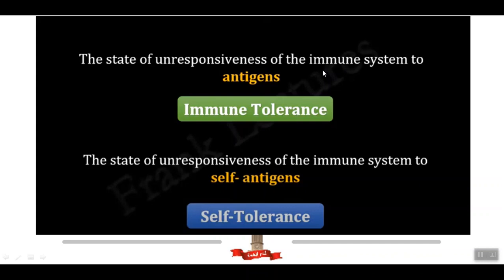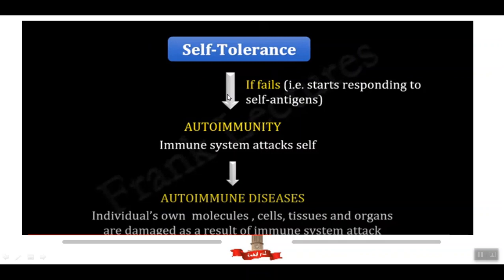The state of unresponsiveness of the immune system to antigens is called immune tolerance, while unresponsiveness specifically to our self-antigens is called self-tolerance. Self-tolerance is the main mechanism that prevents auto-reactive T and B lymphocytes from invading our tissue and causing autoimmune diseases. If self-tolerance fails and auto-reactive lymphocytes start responding to self-antigens, it causes autoimmunity — the immune system attacks our own cells, damaging individual molecules, cells, tissues, and organs.